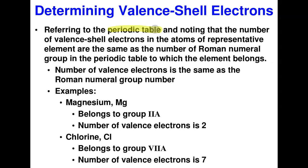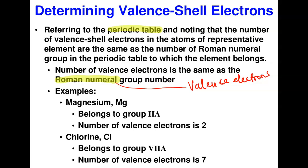In the American designation of the periodic table we use Roman numerals, and this is very helpful because it lets you figure out the number of valence electrons in an atom. For example, magnesium is in group 2A, so it has two electrons in its outermost shell.